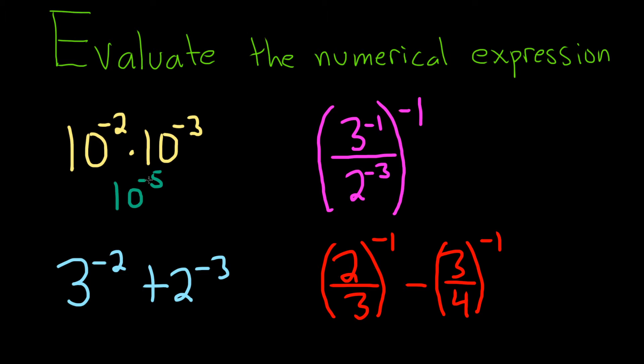Then we can make the 5 positive by bringing the 10 downstairs. Remember, you can think of this as a fraction over 1. So when you bring it down, the exponent becomes positive. So we get 10 to the 5th. And so this is equal to 1 over.